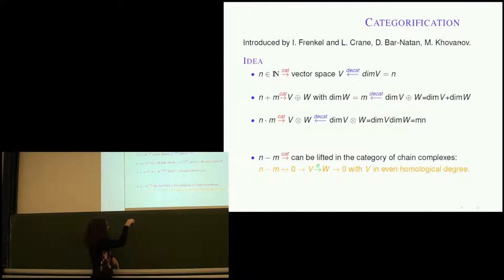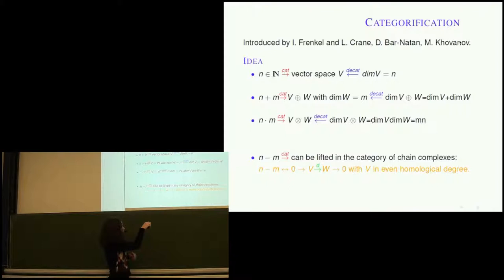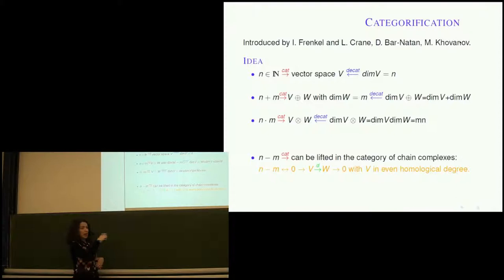Let's say V is the vector space of dimension N and W is the vector space of dimension M. Here's a very short chain complex: 0 → V → W → 0. There's also the question of the differential, but we won't worry about that now. We want to put V, which measures N, in even degree, and W in odd degree, because decategorification in this setting takes the form of the Euler characteristic. So the Euler characteristic of this short chain complex is precisely N minus M.